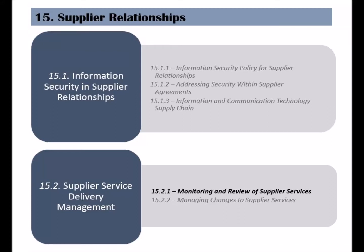The second category of the Supplier Relationships Clause is called Supplier Service Delivery Management. The objective of this category is to ensure that the supplier's provided services are according to the agreements. It has two controls, and the first is called Monitoring and Review of Supplier Services.